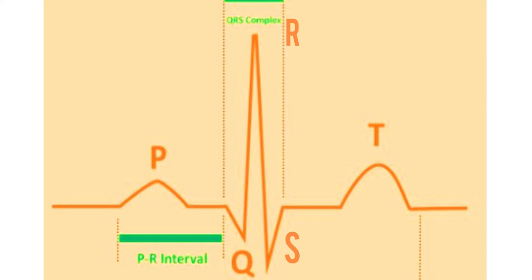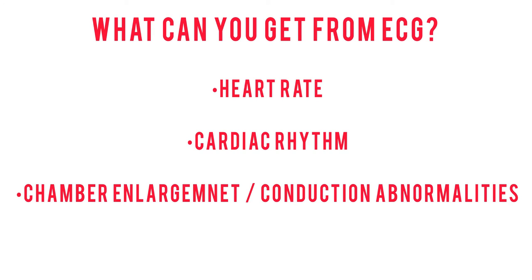The P wave indicates atrial depolarization, while the PR interval indicates impulse delay at the AV junction. The QRS complex indicates ventricular depolarization — the electrical excitation of the ventricles. The T wave indicates ventricular repolarization.